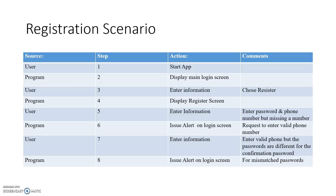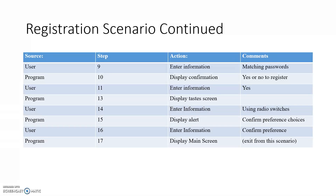The registration scenario: at step one, the user starts the app. Step two, the program displays the main login screen. Step three, the user enters information, choosing to register. At step four, the program displays the registration screen. At step five, the user enters a password and a phone number, but is missing a number on the phone number. At step six, the program issues an alert requesting a valid phone number. At step seven, the user enters information — the phone number is valid, but the passwords are mismatched. Step eight, the program issues another alert for that. At step nine, the user enters matching passwords. Step ten, the program displays a confirmation yes or no to register. At step eleven, the user enters yes. The program at step thirteen displays the taste screen, and we go through the rest of the scenario the same way as the login scenario. The program at step seventeen displays the main screen.